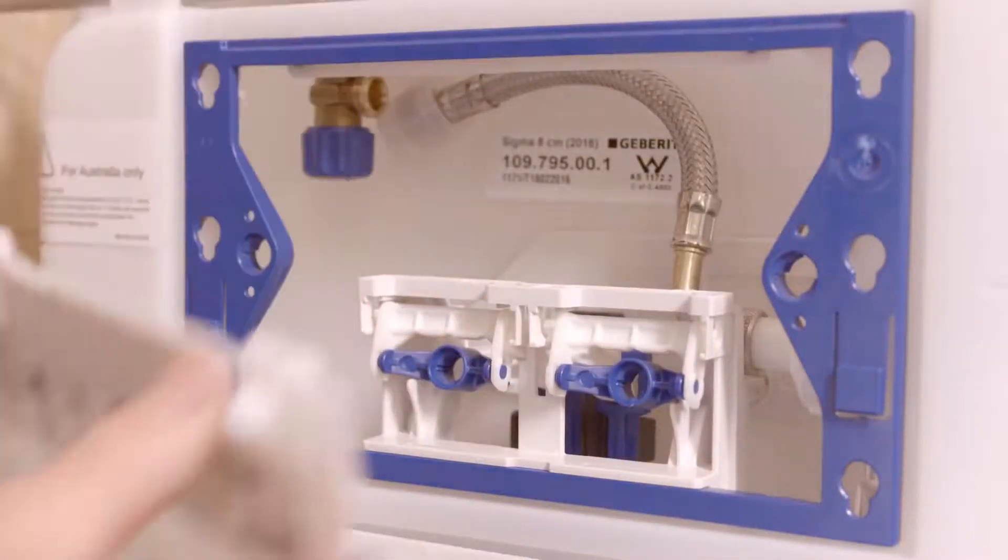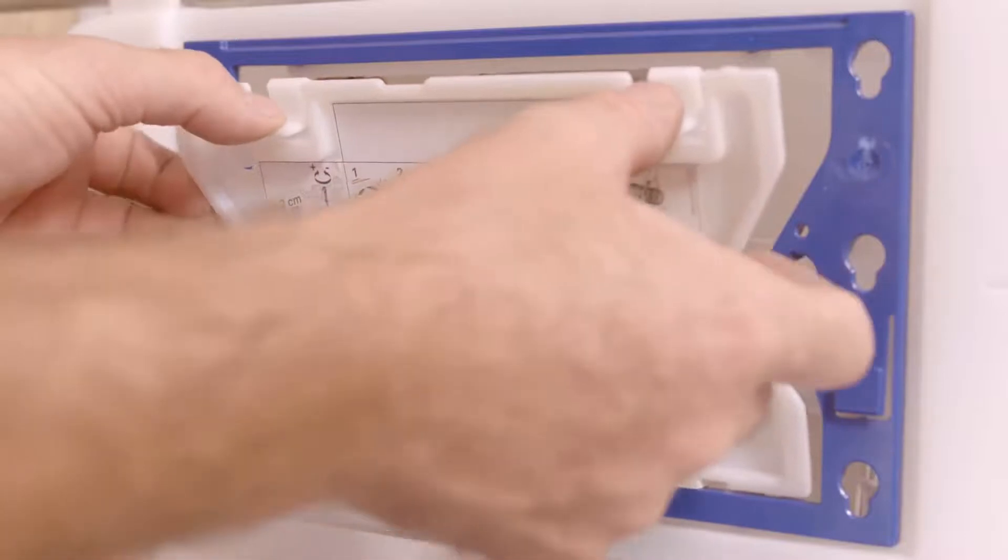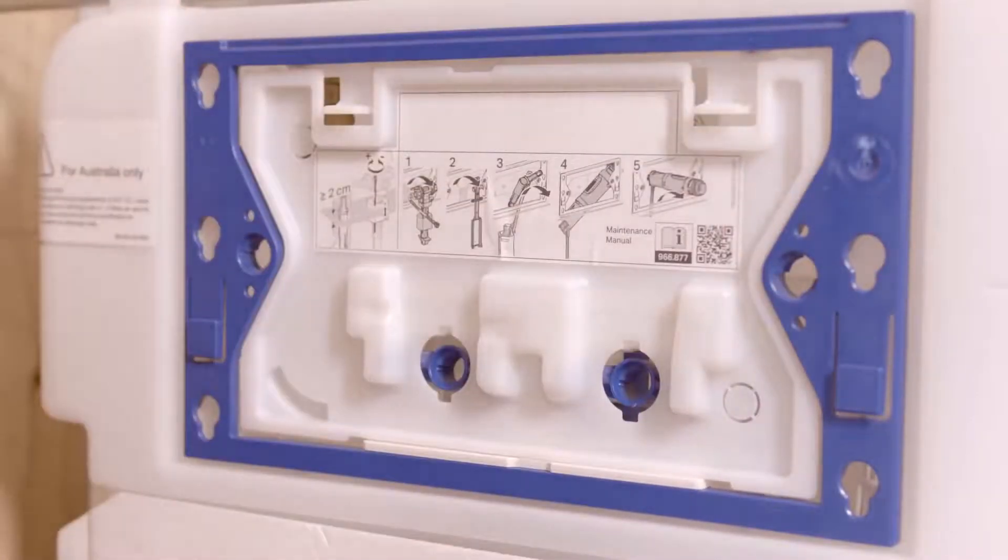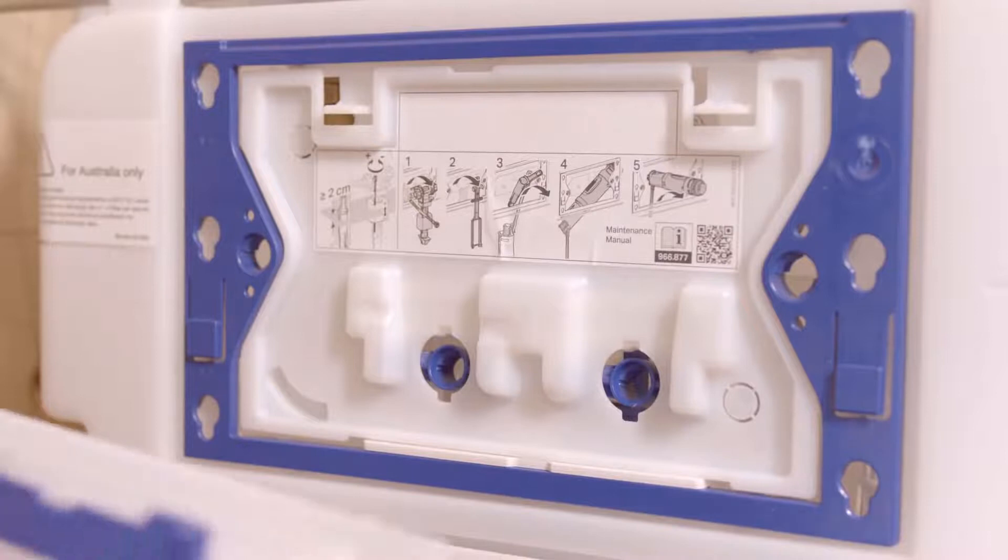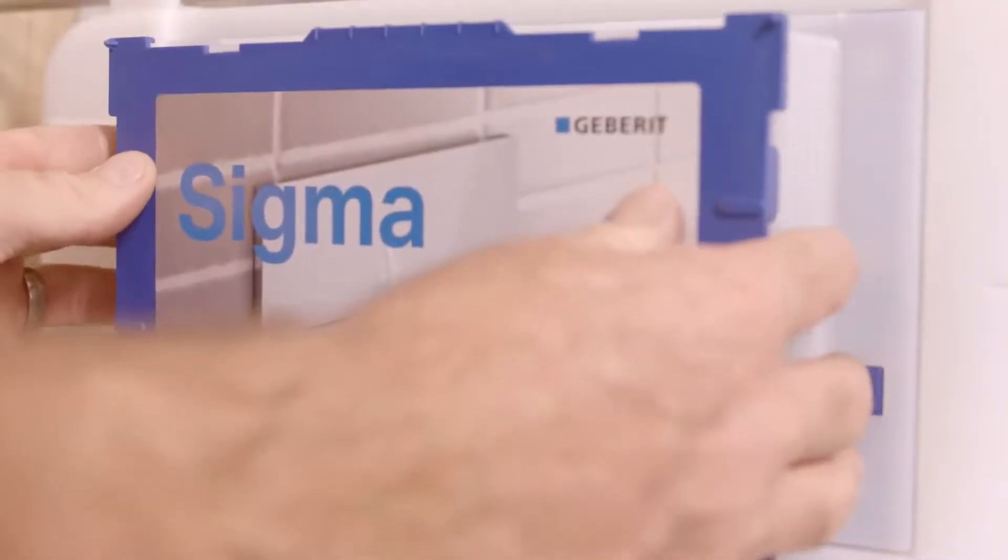Once done, check the installation is ready for the wall linings and tiling. When the wall linings and tiling are completed, you're ready to install the pan and the actuator buttons.